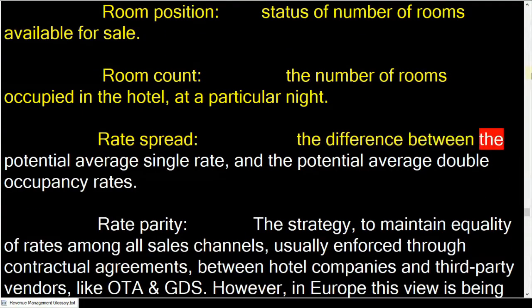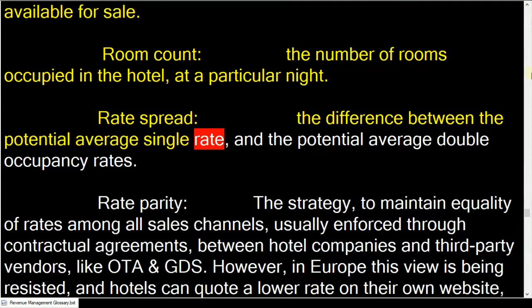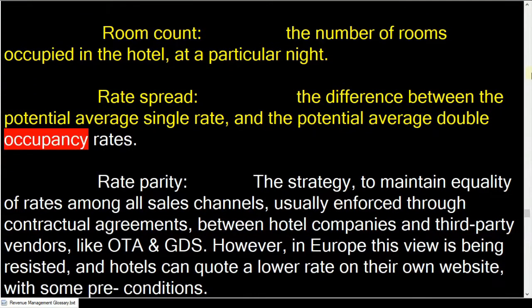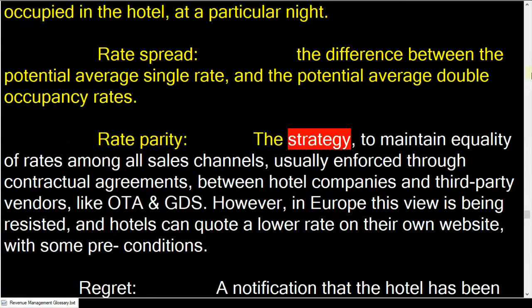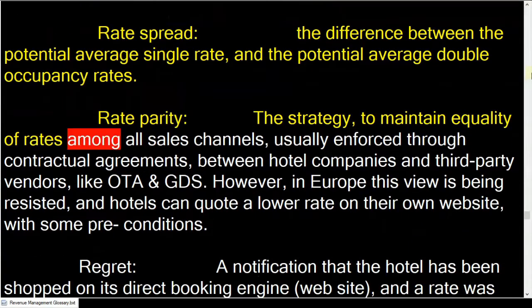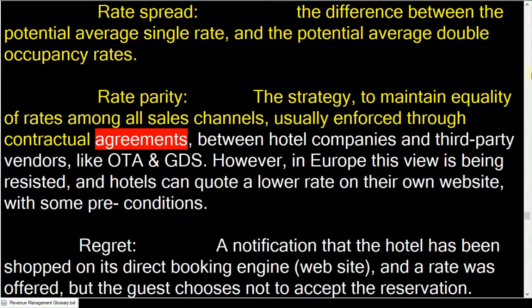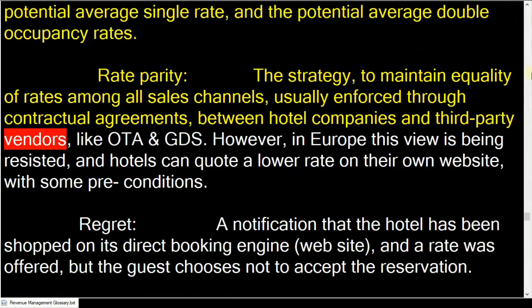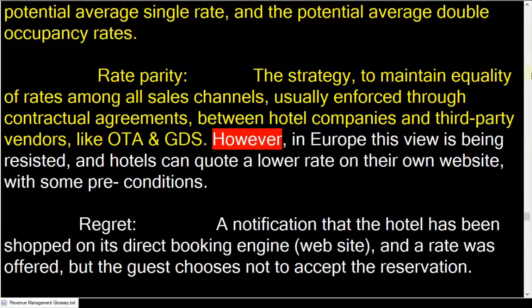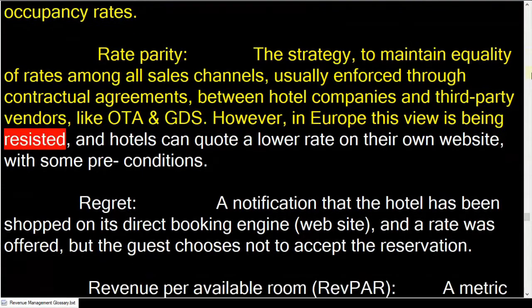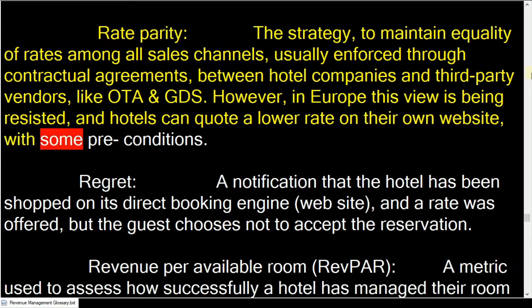Rate spread: the difference between the potential average single rate and the potential average double occupancy rates. Rate parity: the strategy to maintain equality of rates among all sales channels, usually enforced through contractual agreements between hotel companies and third-party vendors like OTAs and GDS.